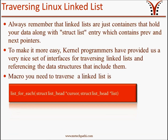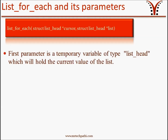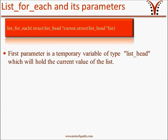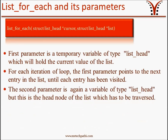This is the macro we need to use to traverse the Linked List. This macro name is list_for_each with two parameters. Both are list_head structures. The first parameter is a temporary variable of type list_head which will hold the current value of the list. For each iteration of the loop, the first parameter points to the next entry in the list until each entry has been visited. The second parameter is again a variable of type list_head, but this is the head node of the list which has to be traversed.